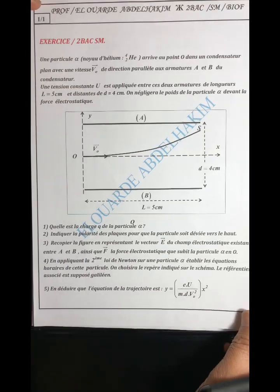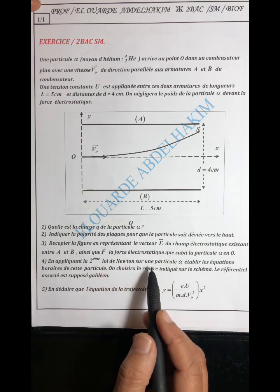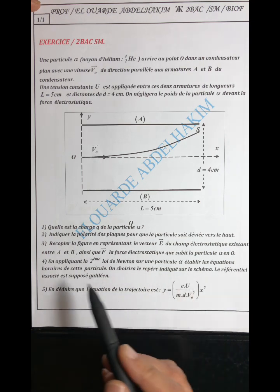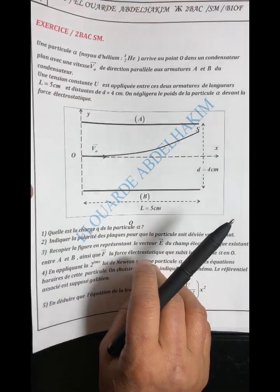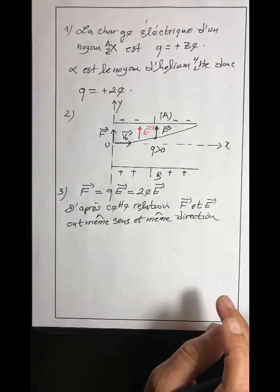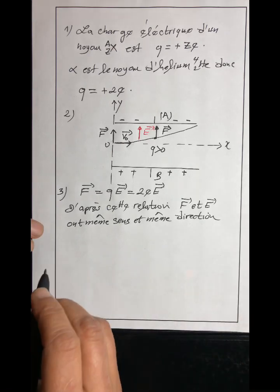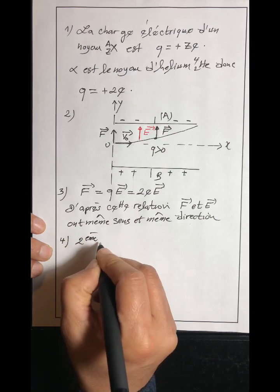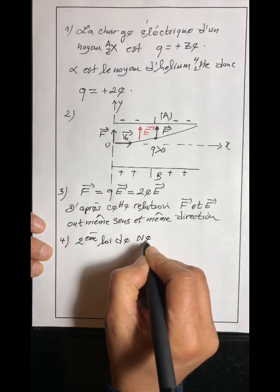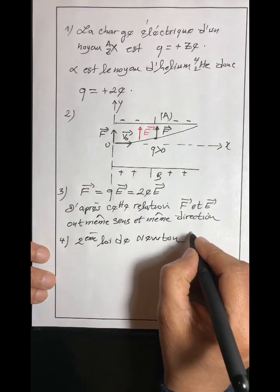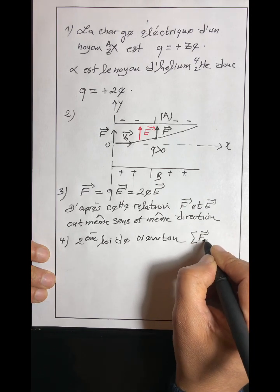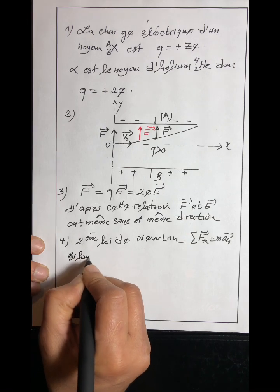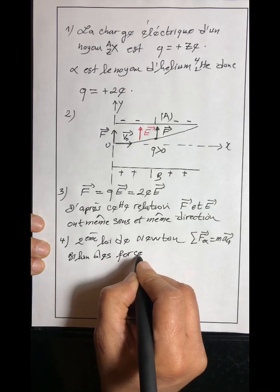Question 4 : en appliquant la deuxième loi de Newton sur la particule alpha, établir les équations horaires. Le référentiel est supposé galiléen, donc on a le droit d'utiliser la deuxième loi de Newton. Bilan des forces exercées sur la particule alpha : il y a le poids P et la force électrique F = Q·E. Le poids est négligeable devant F d'après l'exercice.